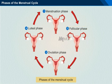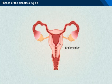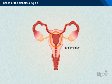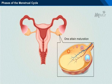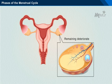The next phase after menstruation is the follicular phase. During this phase, the endometrium of the uterus begins to build up again. At the same time, several follicles start maturing in the ovaries. However, only one of these follicles will attain maturation; the others will eventually deteriorate and disappear.